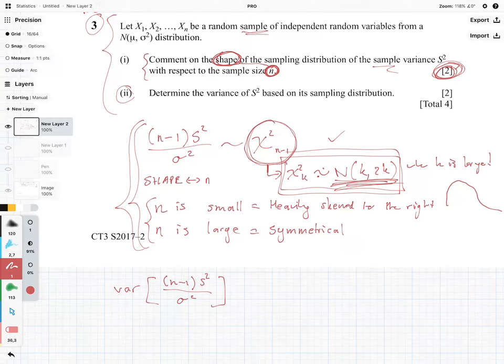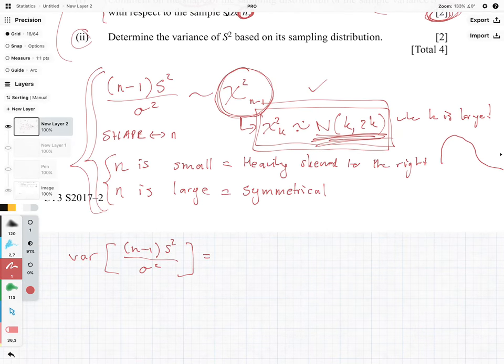Now what we know, or where this will take us, is the following. We are going to get 2n minus 1.